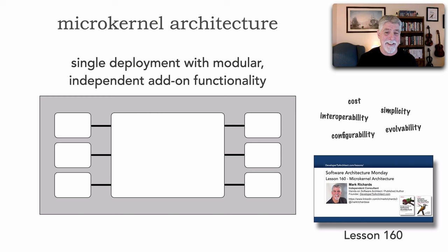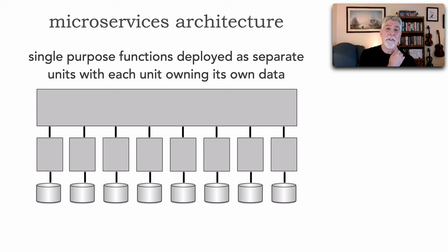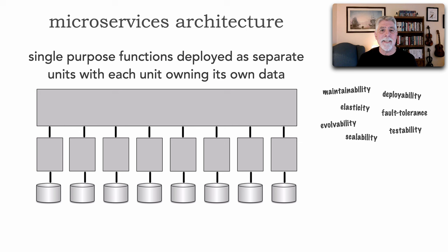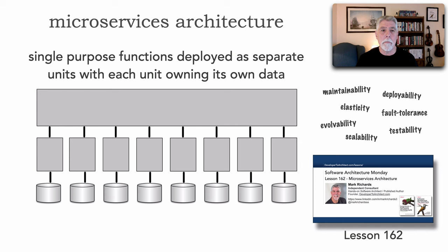Now let's look at distributed architectures, starting with microservices. The shape of microservices is single-purpose functions deployed as separate units of software, each owning its own data. Contributing to that shape are high levels of maintainability, testability, deployability, scalability, elasticity, fault tolerance, and evolvability — these are all the superpowers of the microservices architecture. Go to lesson 162 to learn more about microservices, when to use it, and bounding context.